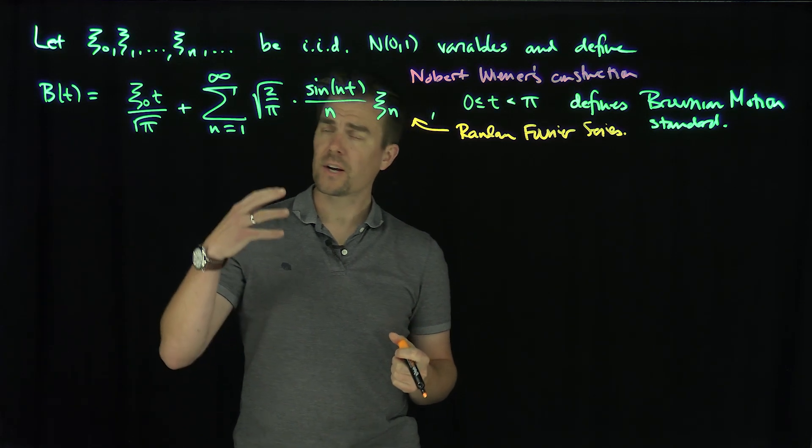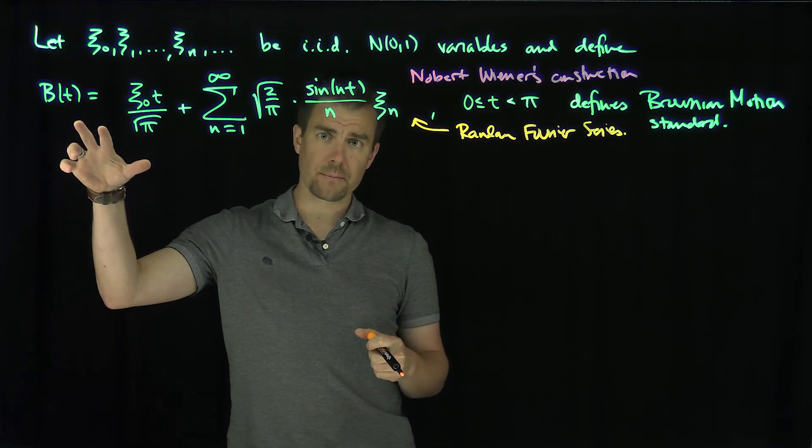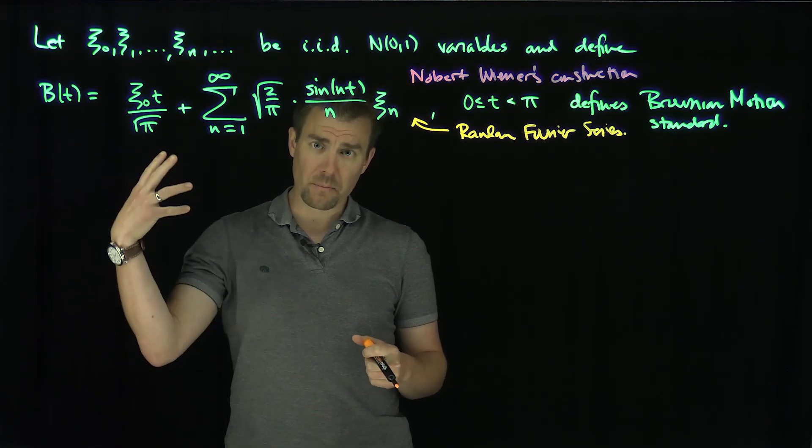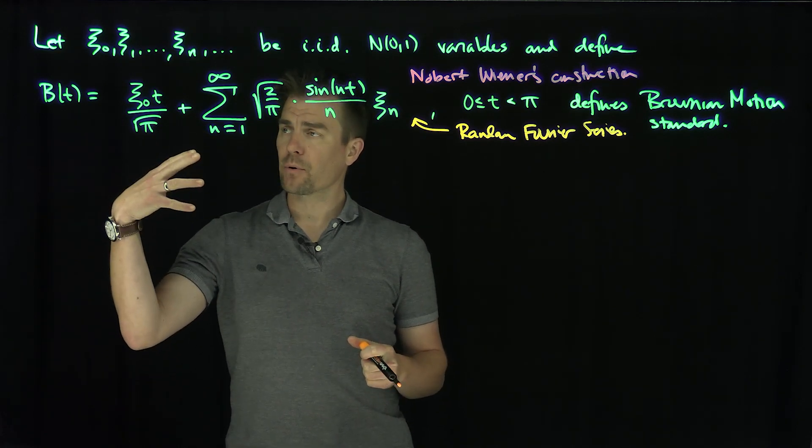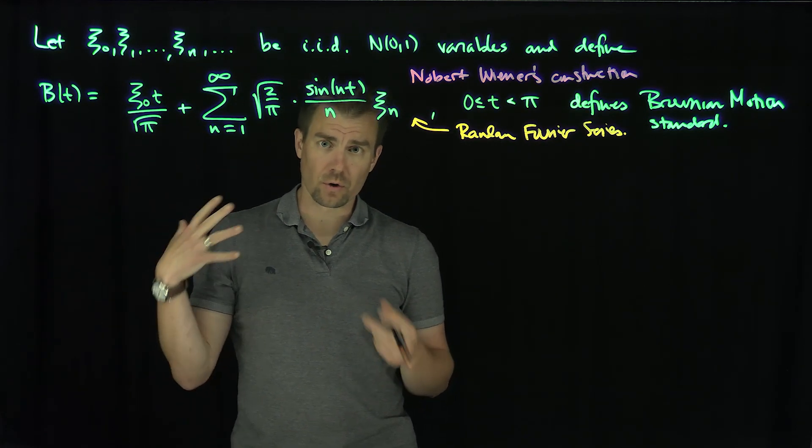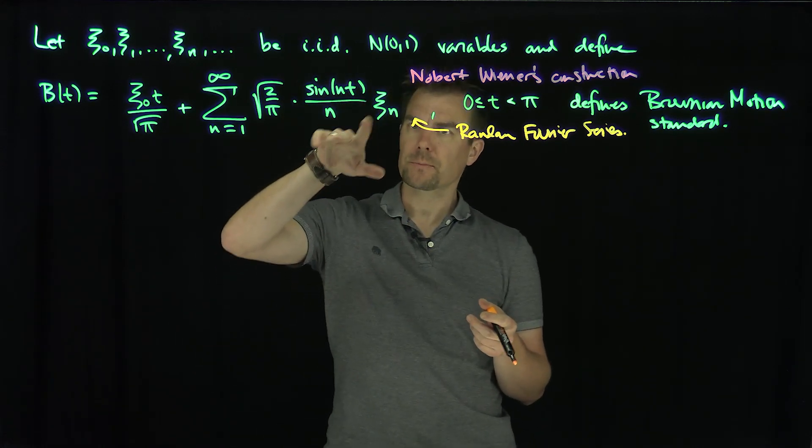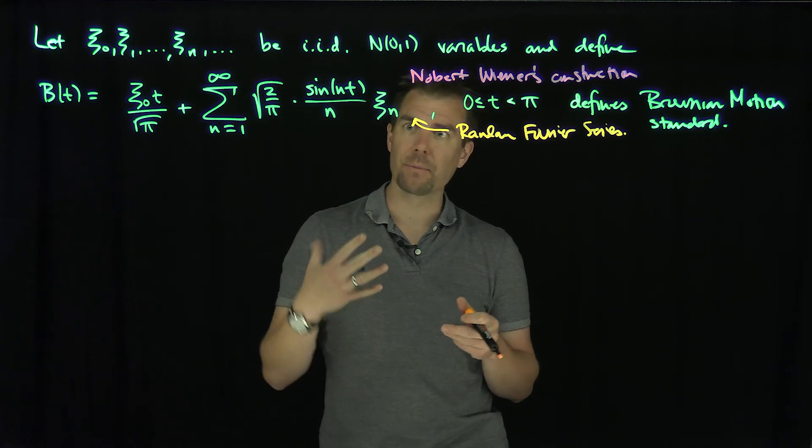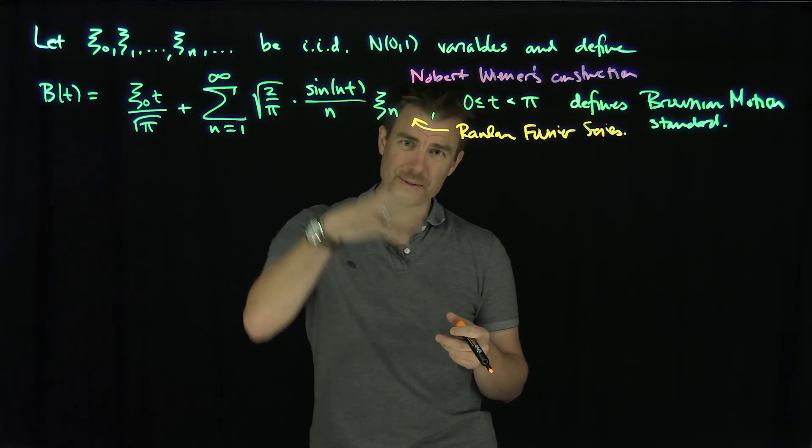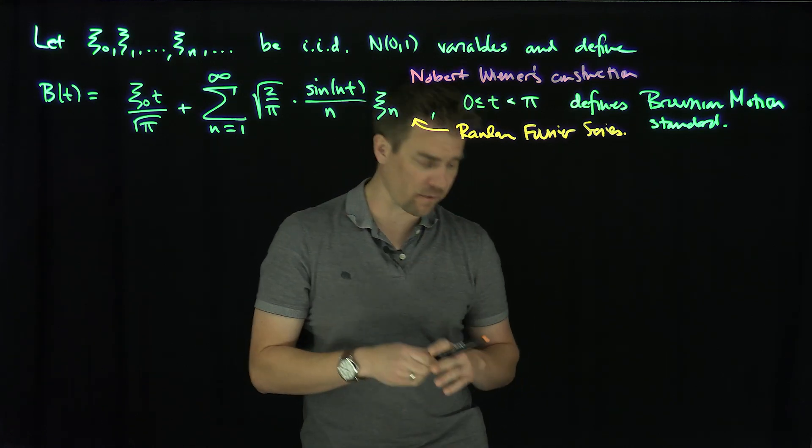So we need to prove a whole bunch of different things. I need to prove this is almost surely continuous. I need to prove that the covariance of B(t) and B(s) is the minimum of t and s, and I need to prove that this thing is normally distributed. Not only that, it has to converge. The convergence might seem to be okay. The fact that this is like sine of n over n, I can use Abel's test if there was no randomness here. The actual randomness is going to help me, because it's going to draw me down in small events.